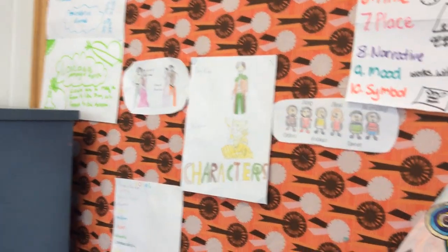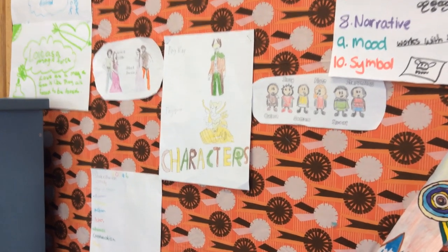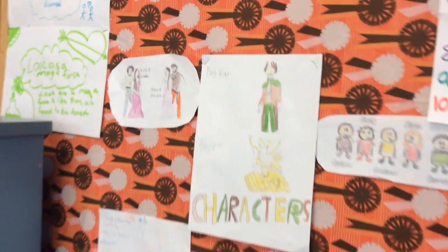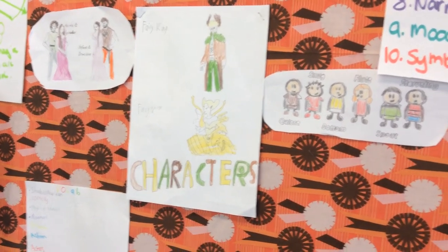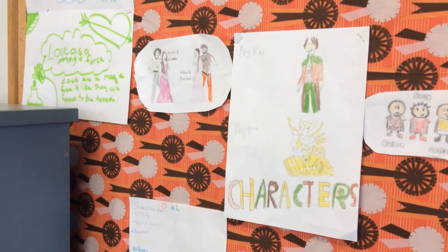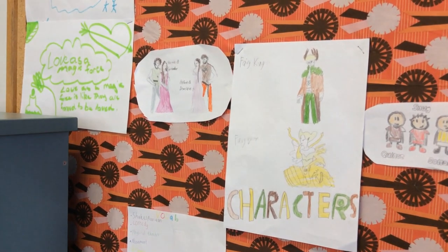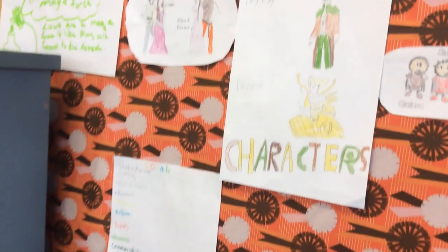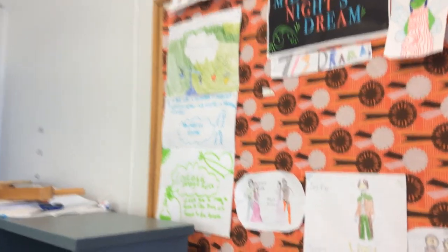They've got some pictures all around here of the different characters we see in the play A Midsummer Night's Dream — so you've got the fairy king, Queen Titania, and all the people that are in the play: Hermia, Lysander, Helena, and Demetrius.